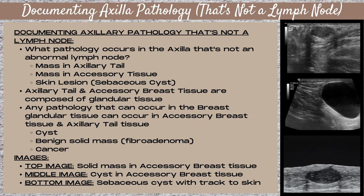The axillary tail and accessory breast tissue are composed of the same glandular tissue found within the breast, so any pathology that can occur in breast glandular tissue can occur there too — cysts, benign solid masses such as a fibroadenoma, and cancer. In the images shown, the top image is a solid mass within accessory breast tissue; the glandular tissue appears white just underneath the skin line, and that accessory tissue surrounds the mass.